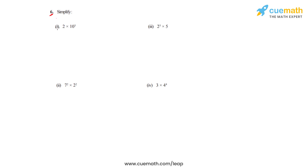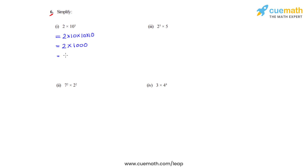Question number 6 asks us to simplify 8 bits. We will take the first 4 bits first and start with the first bit. We have been given 2 times 10 raised to 3, that is 10 is multiplied 3 times to itself and the product is multiplied by 2. So we get 2 times 1000, and the answer becomes 2000.